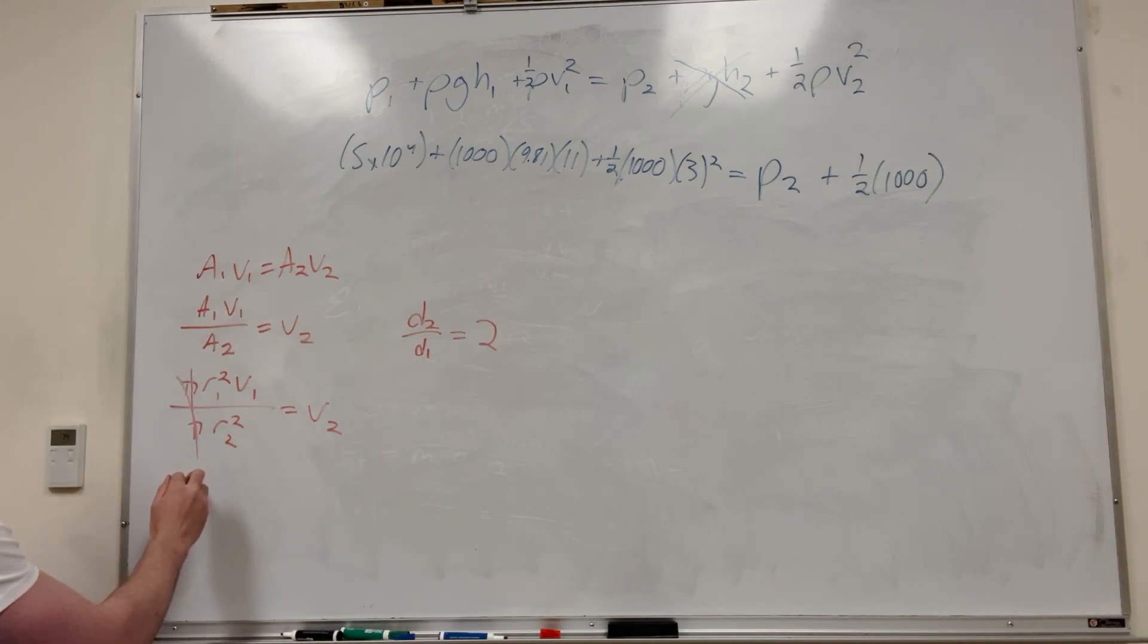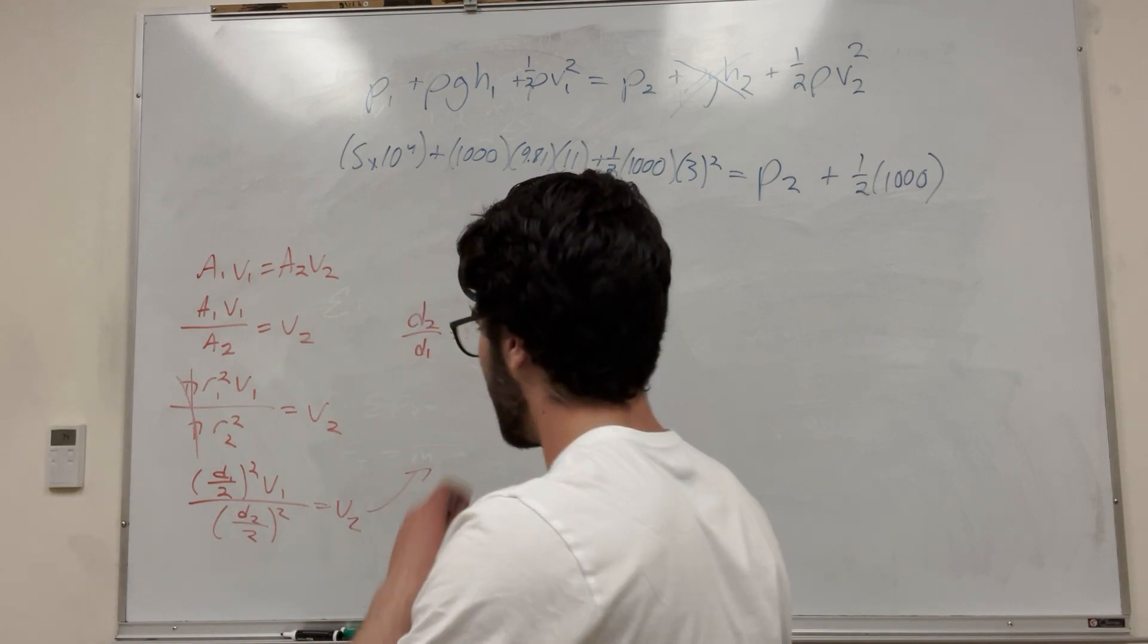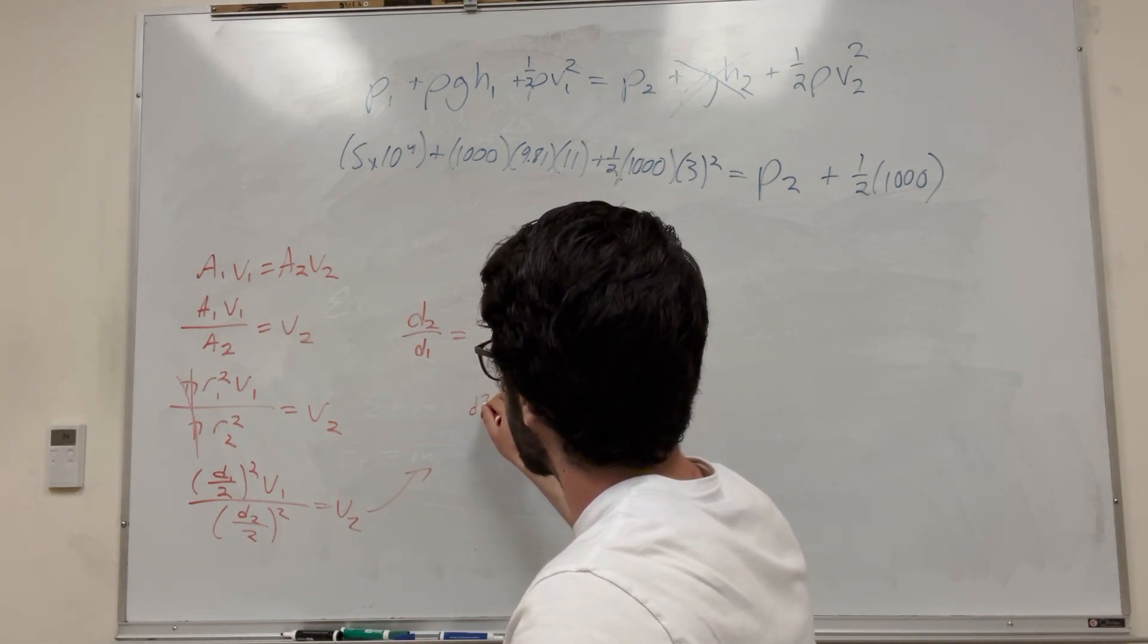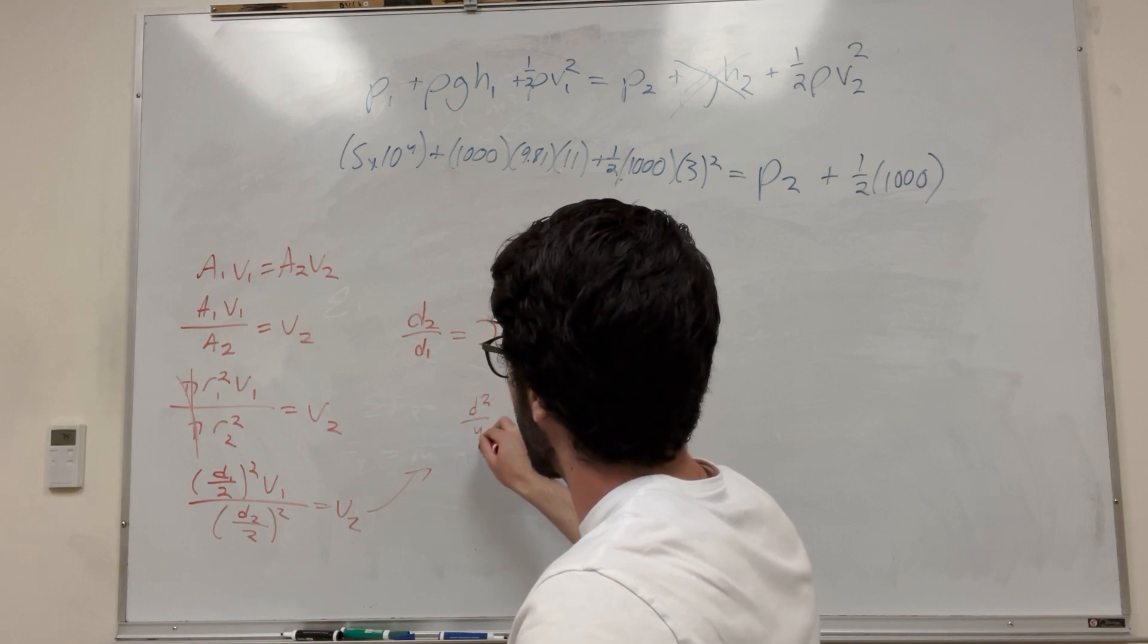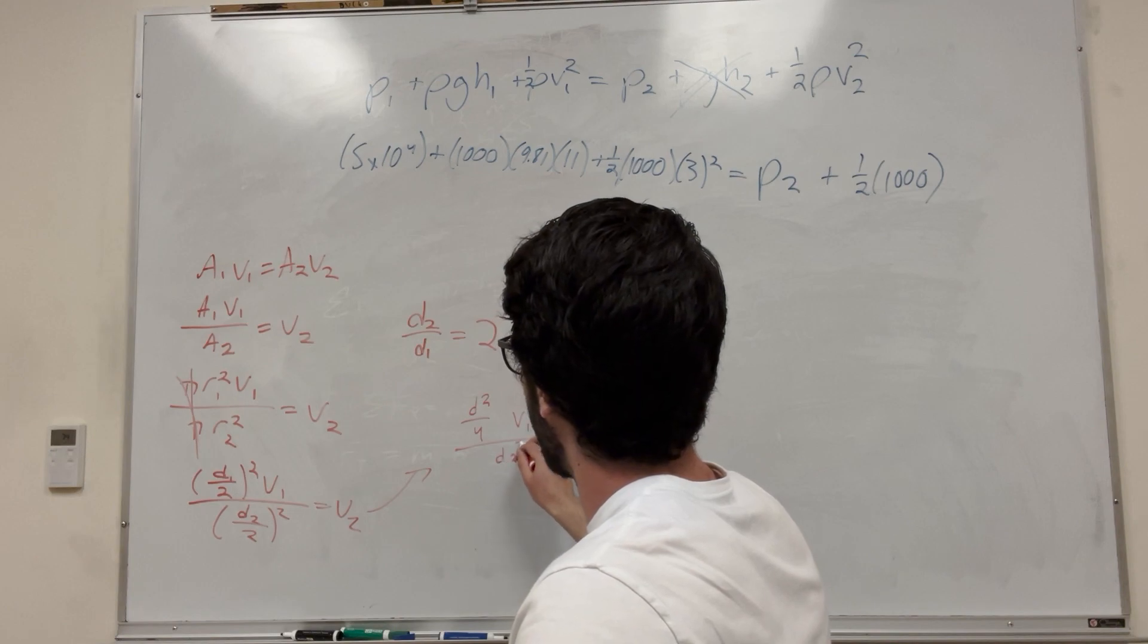Instead of radius, radius is going to be set as diameter divided by 2 squared times velocity of 1. This is 1, this is 2 over 2 squared. So, I'm going to bring this over here because I've got some work to do. So, what this is going to work out to is diameter 1 squared over 4 velocity of 1 is equal to diameter 2 squared over 4.